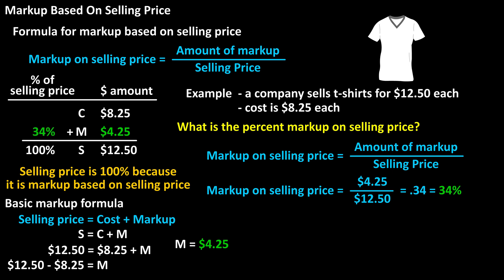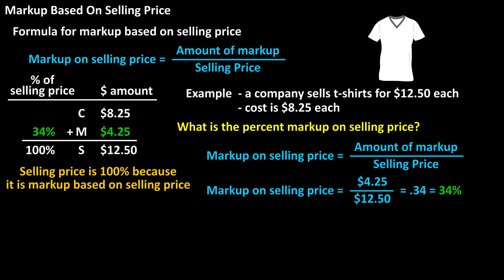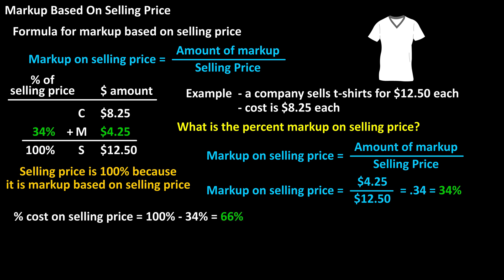We can put that in the table, and we can also calculate the percent cost on selling price, which is 100% minus 34% (the markup percent), giving us 66% as the percent cost on selling price.